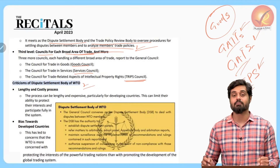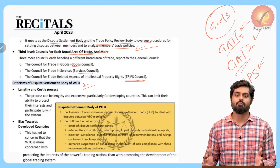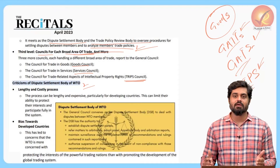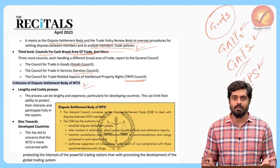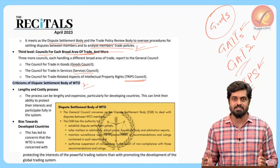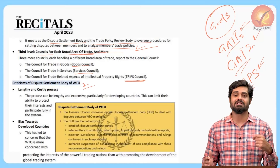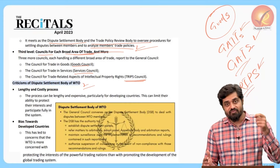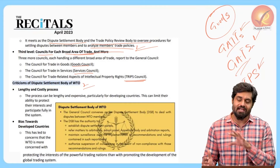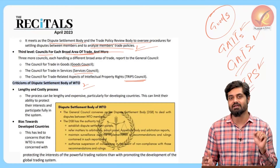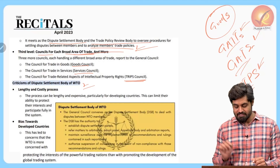Criticism of the dispute settlement body: the dispute settlement function is critical because if rules are not followed due to lack of enforcement, there is no point in having rules at all. Therefore, the dispute settlement body is sometimes referred to as the 'crown jewel' of WTO. Without it, WTO cannot function, as defectors could violate rules without being penalized.